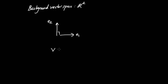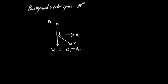For example, I could cook up some vector V which is going to be E1 minus E2. Graphically, minus E2 points downward, and V is given by the sum of those two vectors using the parallelogram rule. So I'm going to think of E1 and E2 as the basis, and all other vectors are going to be linear combinations of E1 and E2 — just standard linear algebra.